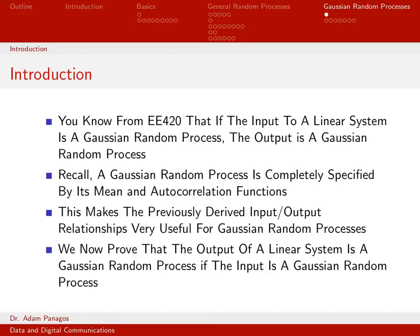Nothing about that is new. What is new is that we're going to do a more rigorous proof that when you put a Gaussian random process into a linear system, the output is also a Gaussian random process. You probably didn't actually prove this in an undergraduate class. Now that we're at a more upper-level graduate course, let's use our knowledge to actually prove that this statement is true.